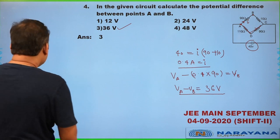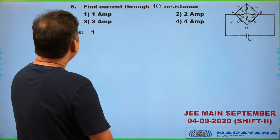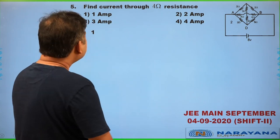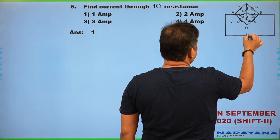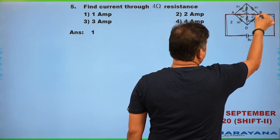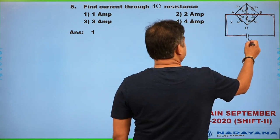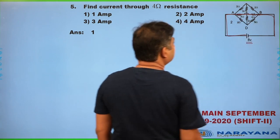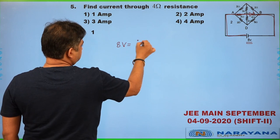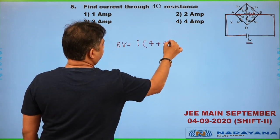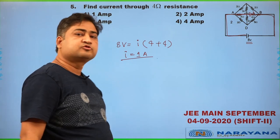Question 5 is again a current electricity question with a similar concept — there is almost no difference from the previous question. We need the current passing through the 4 Ω resistance. There are two 4 Ω resistances in a separate branch: 8 V drops directly across this branch. So I × (4 + 4) = 8 V, giving current I = 1 A. This is the simplest question in this paper.